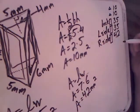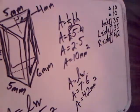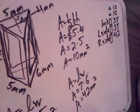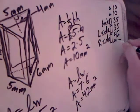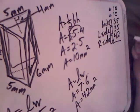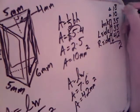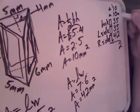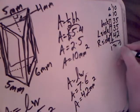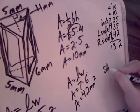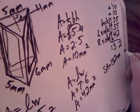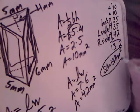Now I have all my measurements. I just need to add everything up to find the surface area. 5 plus 5 is 10, plus 2 is 12. 3 plus 3 is 6, plus 4 is 10, 11, 12, 13. My surface area is 132 millimeters squared.